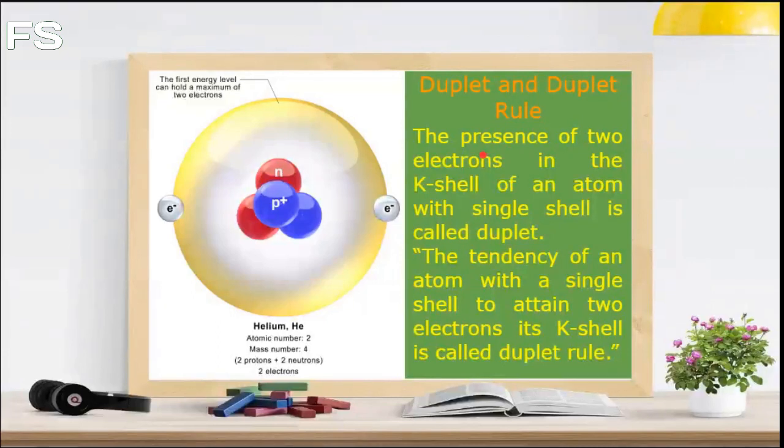Hello everyone. In this video, we are going to discuss the duplet and octet rule. Helium is an inert gas which has only the K-shell with two electrons.